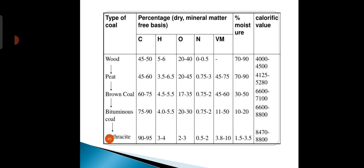For peat: the percentage of carbon is 45–60%, hydrogen 3.5–6.5%, oxygen 20–25%, nitrogen 0.75–3%, volatile matter 45–75%, moisture 70–90%, and the calorific value increases to 4,125–5,280.